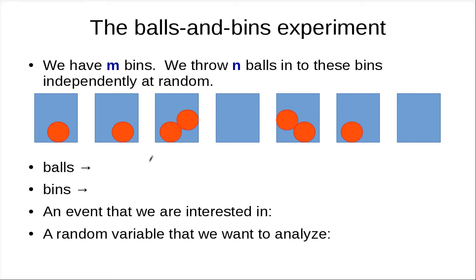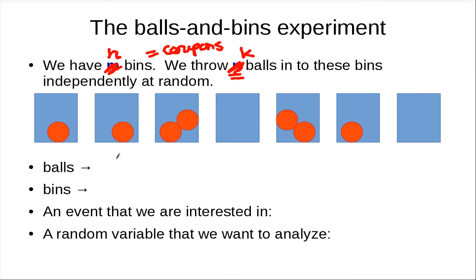I hope everyone has come up with this. It's not that hard, but you have to think about what are the balls and what are the bins. When we perform one experiment, we pick a coupon at random, so it is like we are throwing a ball into one random bin. So we have N bins, which corresponds to coupons, and we throw K balls. Balls are boxes of candies — you open a box and you know which bin you landed in. So bins are coupons.